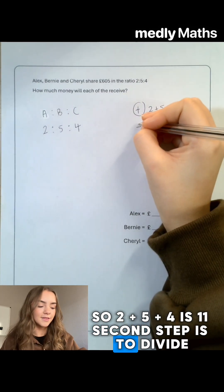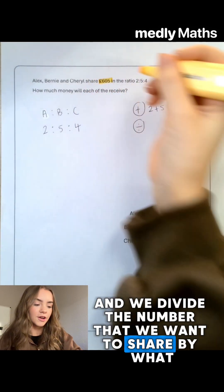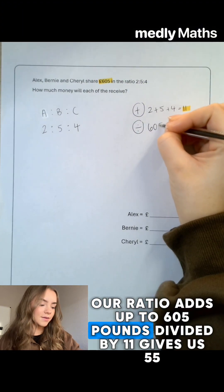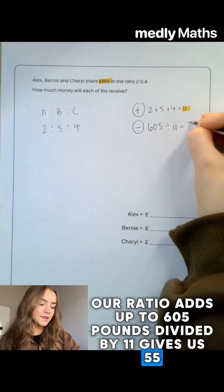The second step is to divide and we divide the number that we want to share by what our ratio adds up to. £605 divided by 11 gives us 55.